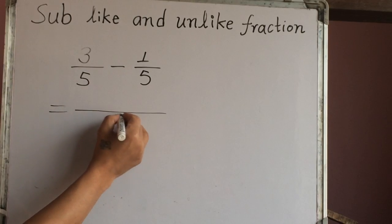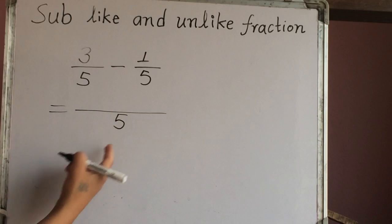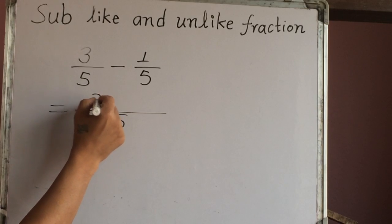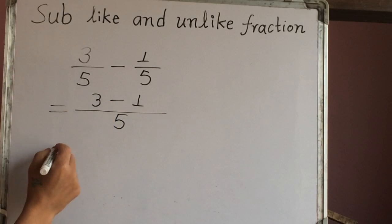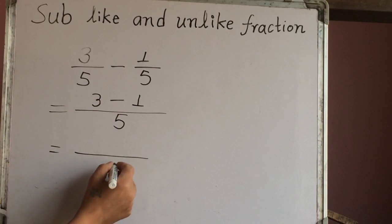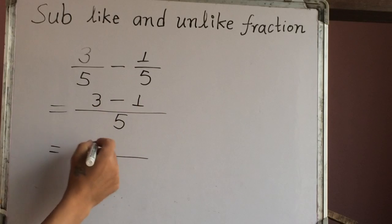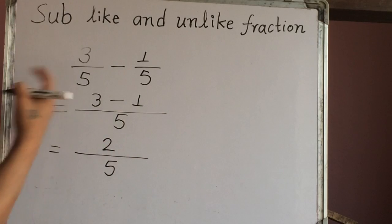So at first we have to make a fraction line. We write the same denominator here, the common one. And the numerators 3 and 1 don't change this sign here. Okay, again make fraction line. 3 minus 1 is 2. The difference of 3 out of 5 and 1 out of 5 is 2 out of 5. This is a like fraction.